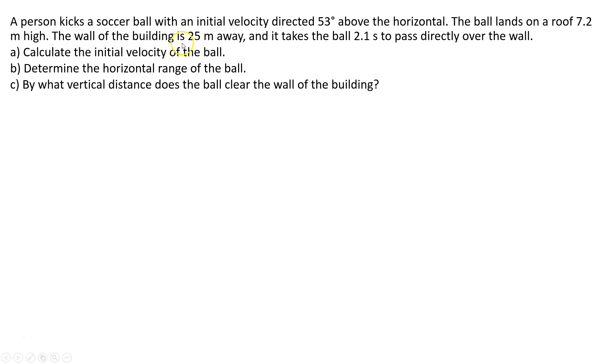The wall of the building is 25 meters away and it takes the ball 2.1 seconds to pass directly over the wall. So part A reads, calculate the initial velocity of the ball.